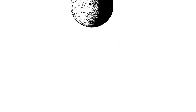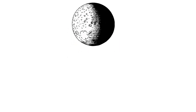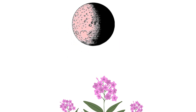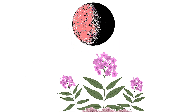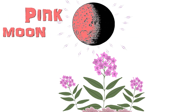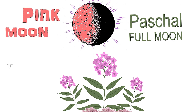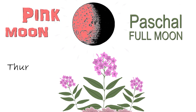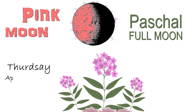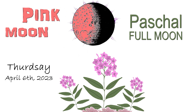The first full moon is known as the pink moon, because that's the season of pink phlox and moss. It's also called the paschal full moon, because it's the first full moon of spring. This year it's Thursday, April 6th, with maximum illumination at 12:37 AM EDT.